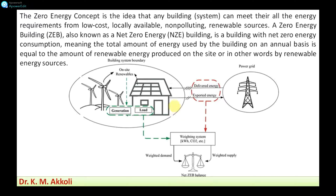Sometimes it is not possible to generate all the energy needs from renewable energy sources. During that time, the energy can be taken from the grid supply. And whenever more energy is produced from that building, that excess energy can be supplied to the grid. Whatever renewable energy sources are used — it may be solar energy, wind, or biomass — if sufficient energy is available it is utilized, and if excess energy is produced, it is supplied to the grid.